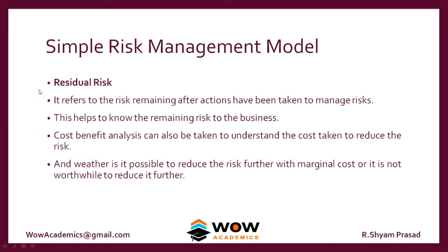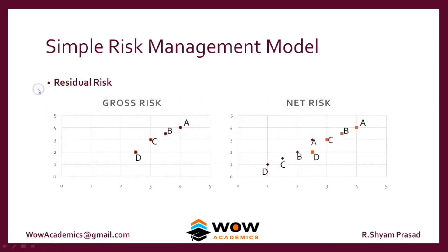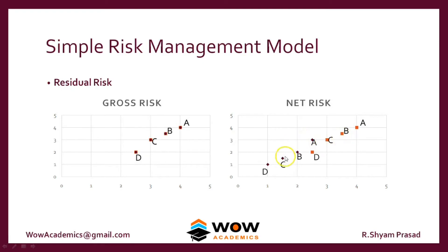Then we move on to residual risk. Even after taking all kinds of controls, reduction, and transfer, there will still be some risk remaining with our company. That is called residual risk. This can be called gross risk, where we have mapped it on a 5 by 5 matrix — these are risks before taking any action. After taking action, the risk has actually fallen to a lower level. That reduced level is called net risk.